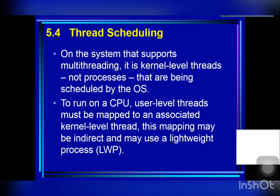An operating system that supports user-level and kernel-level threads schedules kernel-level threads, not processes. User-level threads are managed by a thread library, and the kernel is unaware of them. To run on a CPU, user-level threads must ultimately be mapped to an associated kernel-level thread, although this mapping may be indirect and may use a lightweight process.